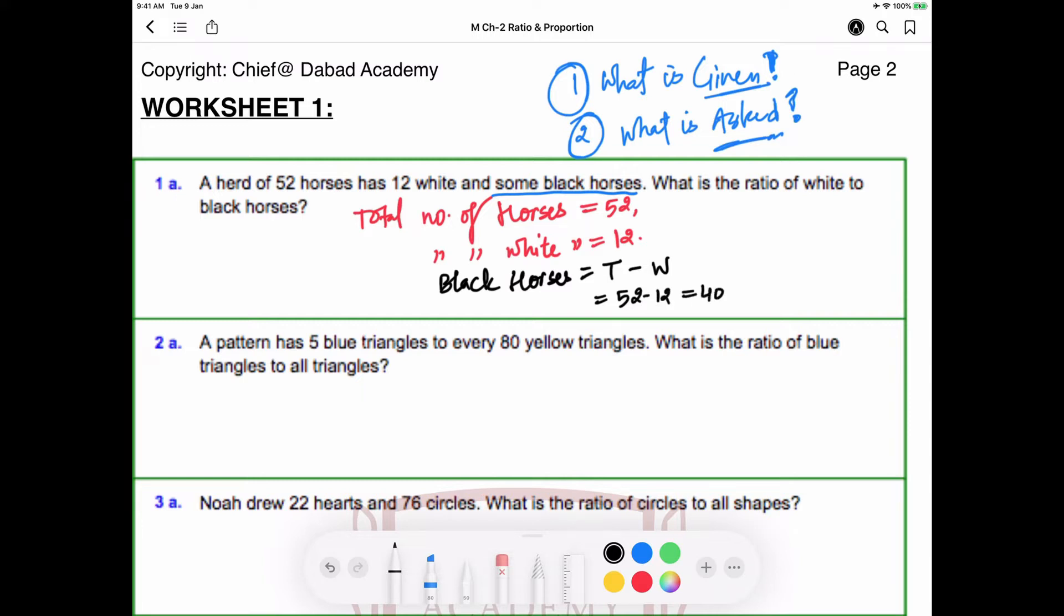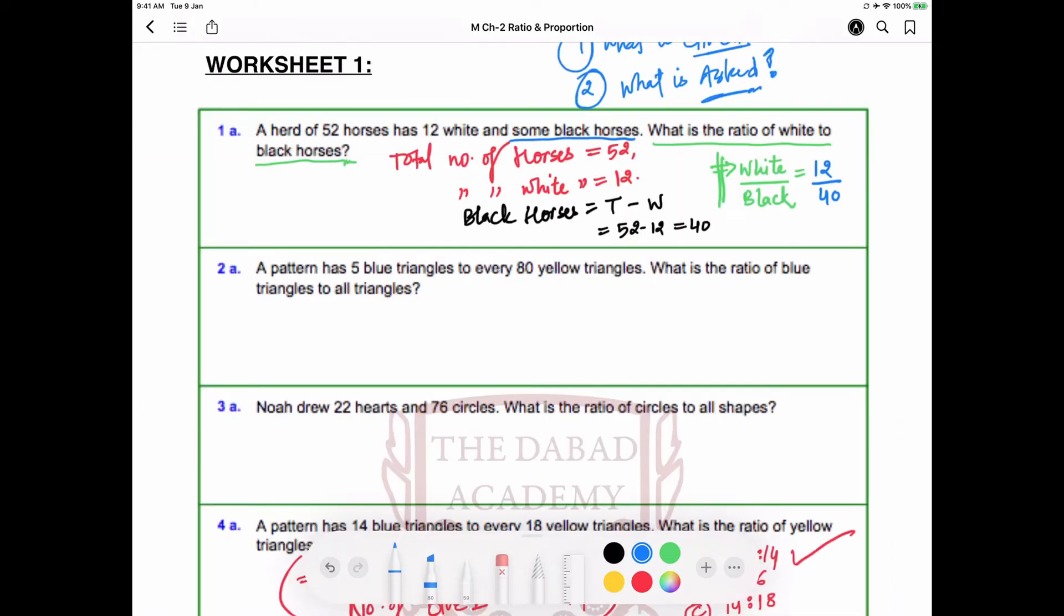Now the original question is: what is the ratio of white to black horses? White will come in the numerator and black horses will come in the denominator. So the ratio is: number of white horses is 12 and number of black horses is 40.